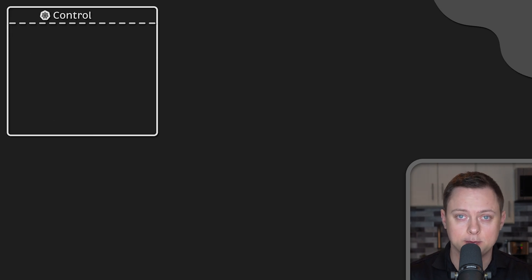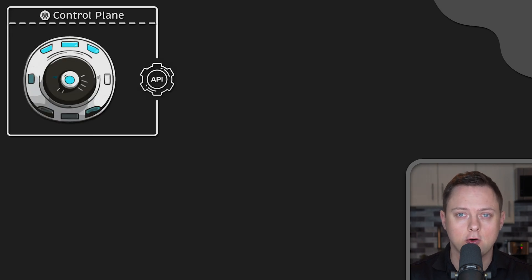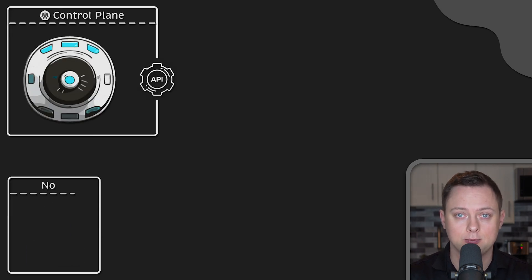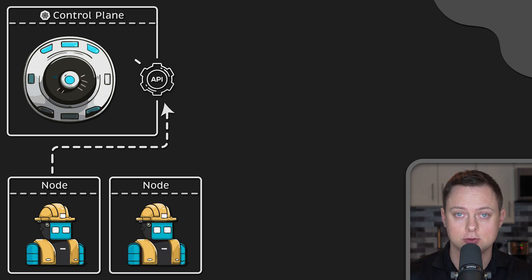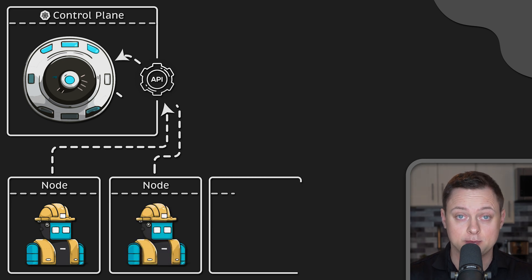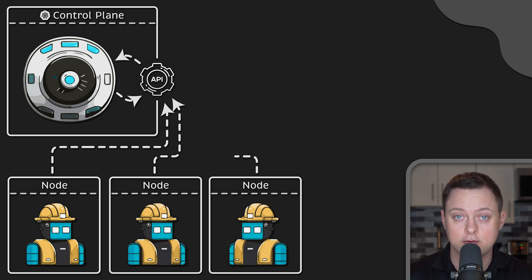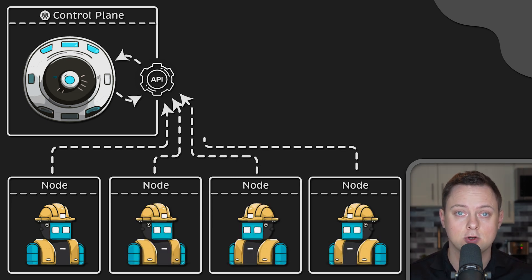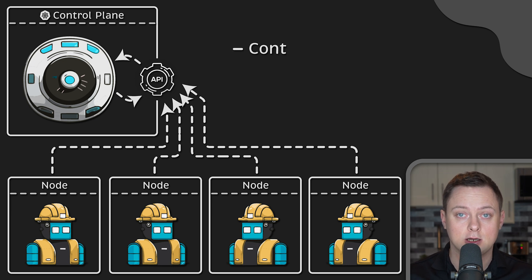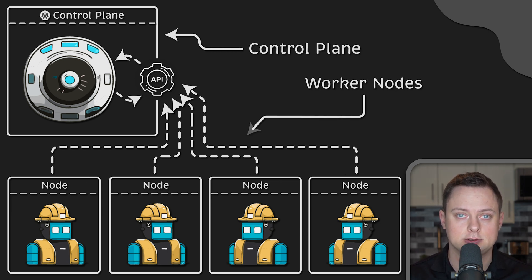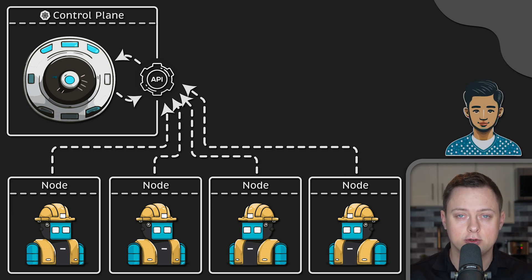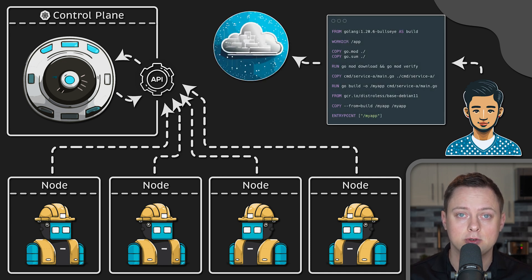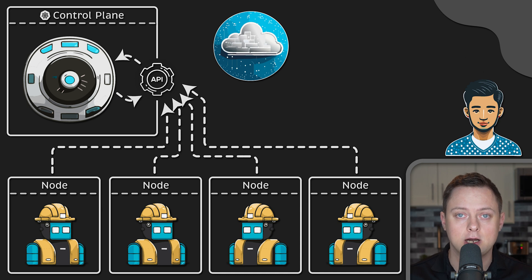In this video, we'll take a look at Kubernetes and go over the most important components that everyone should be aware of, from developers to DevOps. The two high-level components of Kubernetes are the control plane and worker nodes. Let's say you develop an application, create a Docker image, and upload it to a remote container registry such as Docker Hub or ECR.